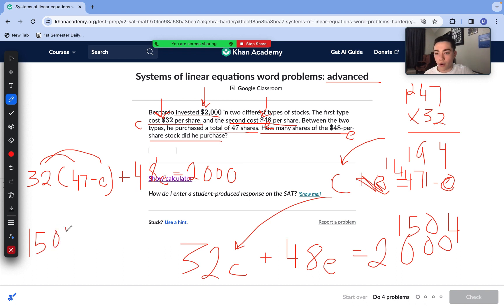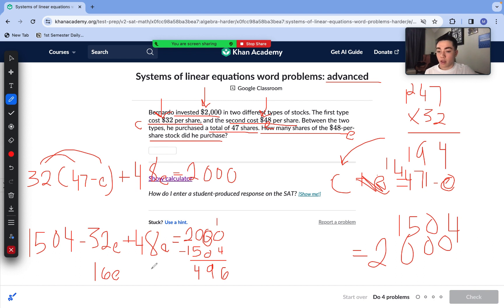So 1,504 minus 32E plus 48E equals 2000. Our next step is to combine our like terms. Negative 32E plus 48E is 16E. So let's replace with just 16E. And we need to also subtract 1,504 from each side. So we're going to do 2,000 minus 1,504, which is equal to 496.